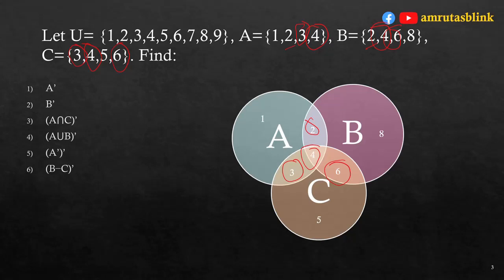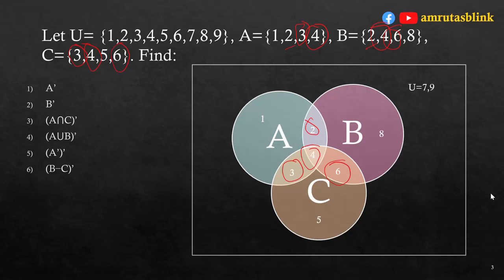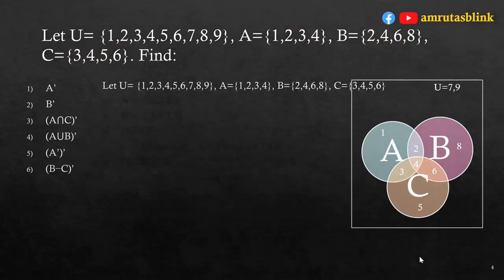Elements 7 and 9 are absent from all three sets A, B, and C, so they belong to the universal set region outside all circles. Now, A complement contains all elements in U but not in A, so A complement = {5,6,7,8,9}.